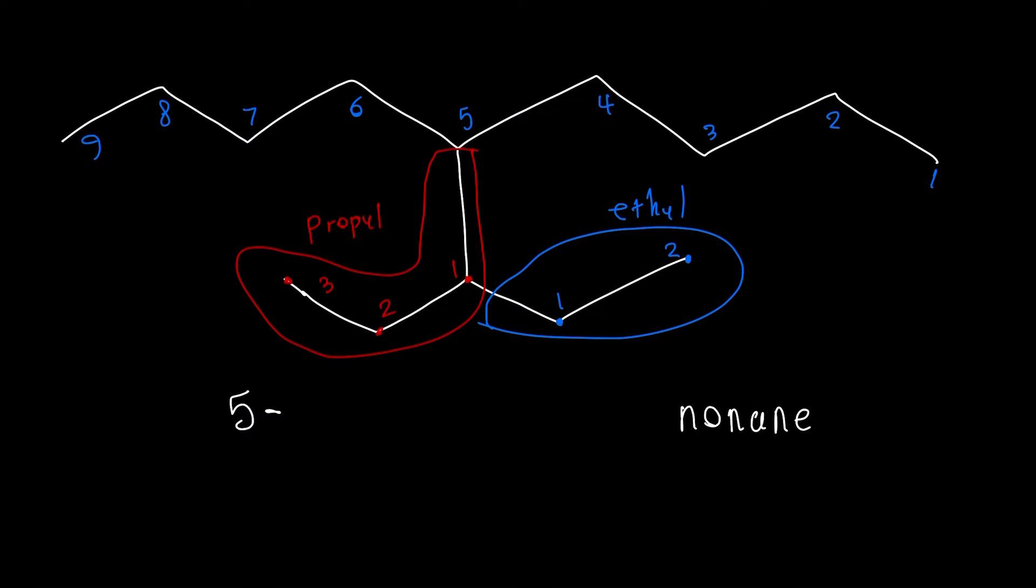So if you think of the propyl as the part of the main one here, the name of this substituent, this whole thing is going to be 1 because the ethyl connects to 1 on the propyl, 1-ethylpropyl.